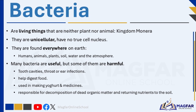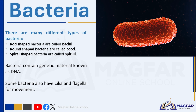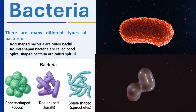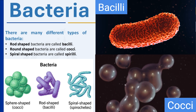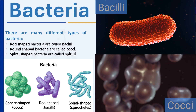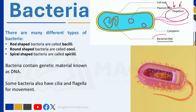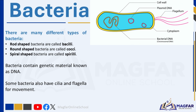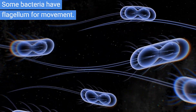Most bacteria can survive particularly adverse conditions such as drought, heat, and cold, and are even resistant to toxins. There are many different types of bacteria, grouped and classified according to the shape of the bacterial cell. Rod-shaped bacteria are called bacilli, round-shaped bacteria are called cocci, and spiral-shaped bacteria are called spirilli. Bacteria contain genetic material known as DNA. Some bacteria also have cilia and flagella for movement, though many bacterial cells do not have a flagellum or cilia.